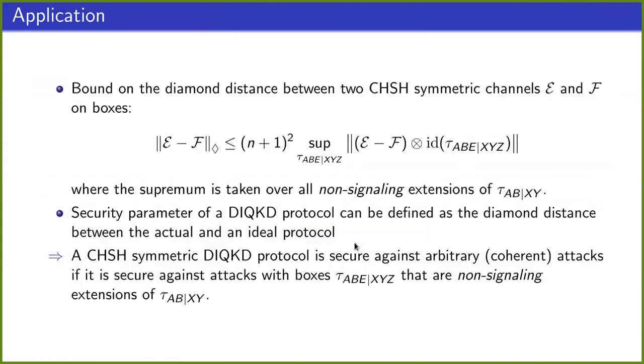Now, let me introduce one of the applications of this theorem concerning the diamond norm between two channels E and F. So the diamond norm measures how well E and F can be distinguished by an attacker that is allowed to supply quantum boxes to E and F, and that is also allowed to keep some system for himself that might be entangled with the quantum box that he supplied.